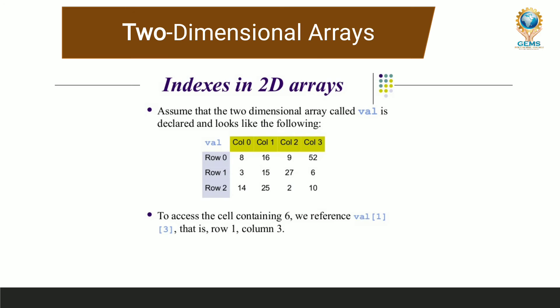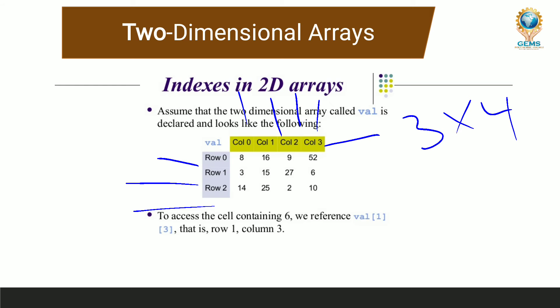Now I will write a syntax for this matrix. There are 4 columns and 3 rows — it is a 3 by 4 matrix. Don't think that we only use matrices with arrays; any similar data — alphabets or numeric values — can be stored in arrays. For understanding, we are taking a matrix as an example to understand the concept of arrays.